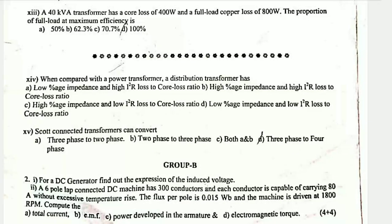Question 14: Comparing power transformers and distribution transformers, the key difference is in percentage impedance and core loss ratio. Distribution transformers have low percentage impedance and high core loss ratio, while power transformers have high percentage impedance and low core loss ratio. Question 15: A Scott-connected transformer can convert 3-phase to 2-phase.